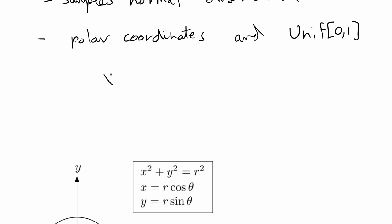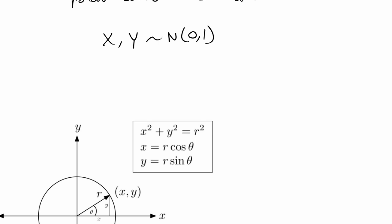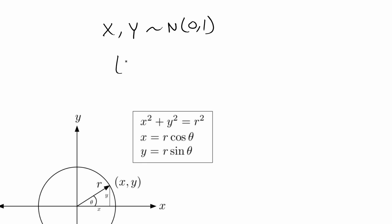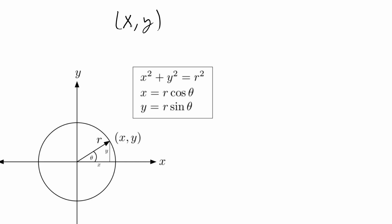The end result is two independent random variables distributed as standard normal with mean zero and variance one. We have two independent normally distributed random variables labeled X and Y, where lowercase x and y denote individual samples. To sample from X and Y we're going to use polar coordinates.